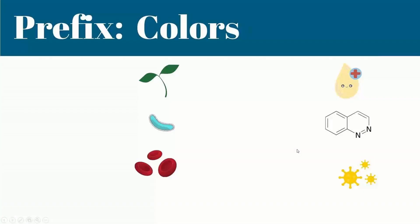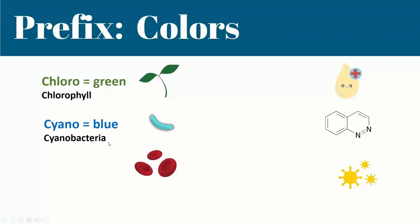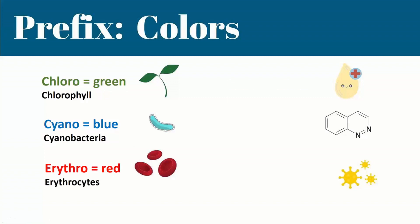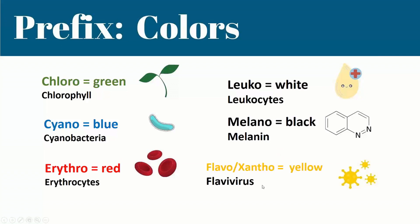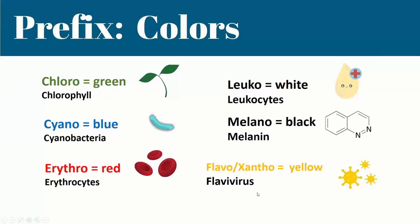Next we go to prefixes. Here are prefixes for colors: Chloro means green — example, chlorophyll. Cyano means blue — example, cyanobacteria. Erythro means red — example, erythrocytes. Melano means black — example, melanin. Flavo or xanto means yellow — example, flavivirus.